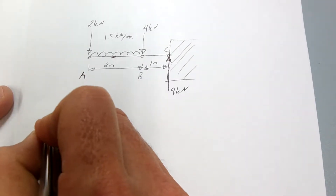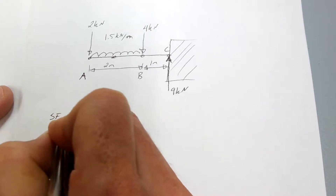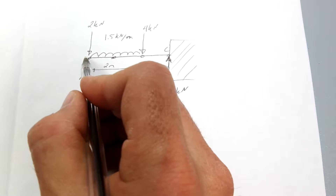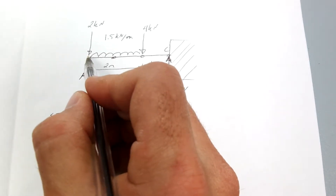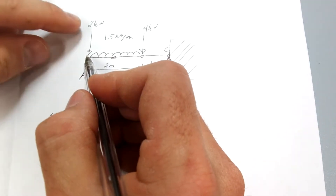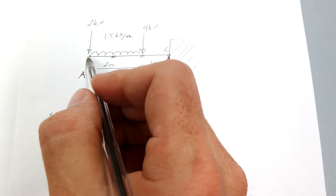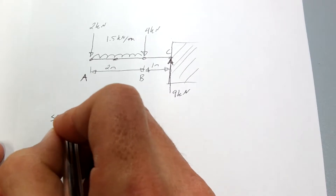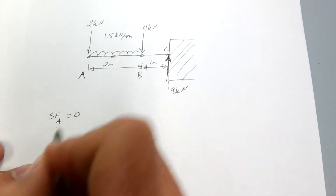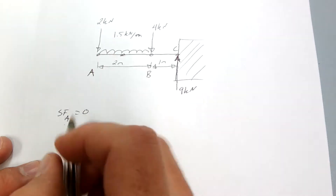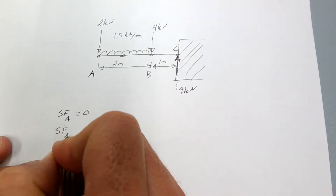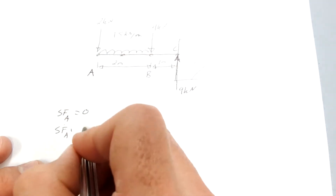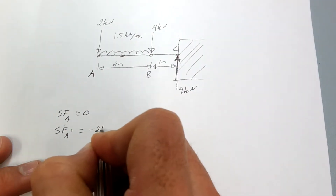At point A, the shear force just to the left of that point — there are no forces, so we have a shear force of zero. Now at point A prime, just to the right of that point, you have a negative 2 kilonewton shear force.